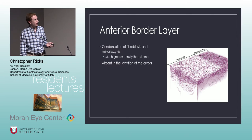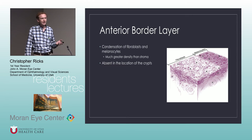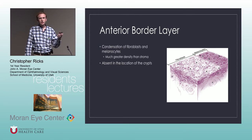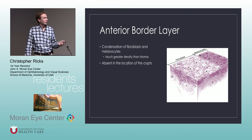The anterior border is a condensation of fibroblasts and melanocytes — it's really, really dense. Where you have the crypts, it is absent, and the reason for that is so that the aqueous humor can more fully bathe the stroma in those crypts.